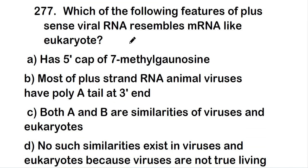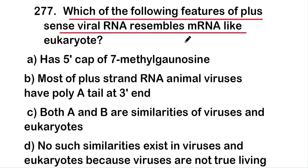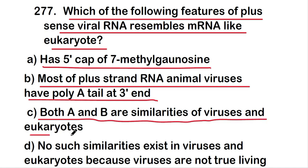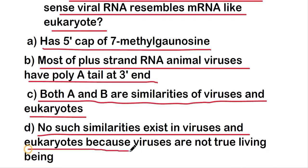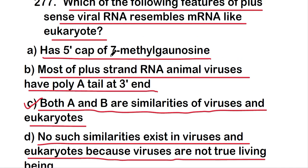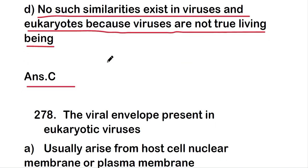The next question: which of the following features of plus-sense viral RNA resembles mRNA like eukaryotes? The options are: they have a 5' cap of 7-methylguanosine; most plus-strand RNA animal viruses have a poly-A tail at the 3' end; both A and B are similarities; or no such similarities exist. The right answer is option C — both A and B are similarities between viruses and eukaryotes.